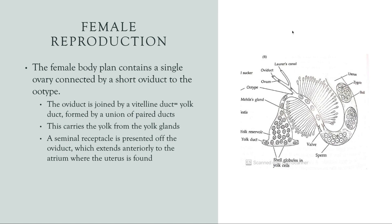Going over female reproduction, the female body plan contains a single ovary connected by a short oviduct to the ootype. The oviduct is joined by a yolk duct, or vitelline duct, which is formed by a union of paired ducts. This carries the yolk from the yolk glands. A seminal receptacle is present off the oviduct, which extends anteriorly to the atrium where the uterus is found. Over here to the right, we have a female organism. You can see here is the uterus, this is the oviduct and the ootype, this is the yolk reservoir and the yolk duct, and here is where the sperm is stored within the seminal receptacle.